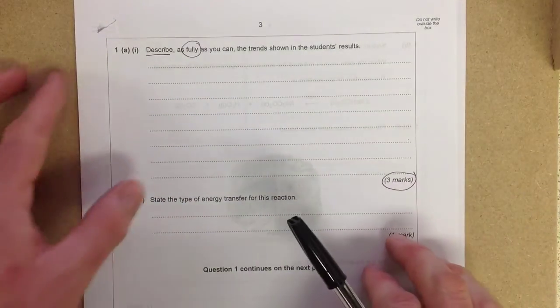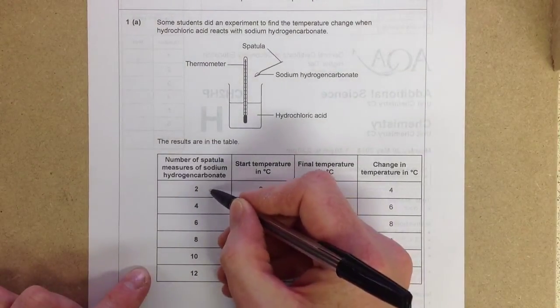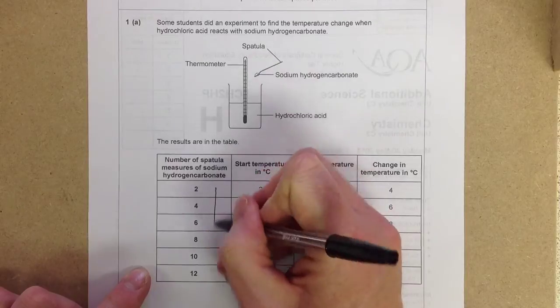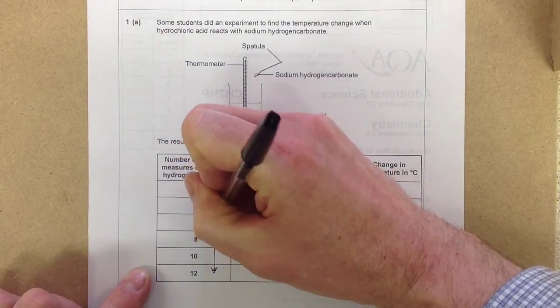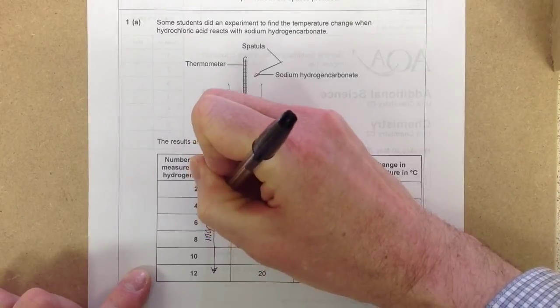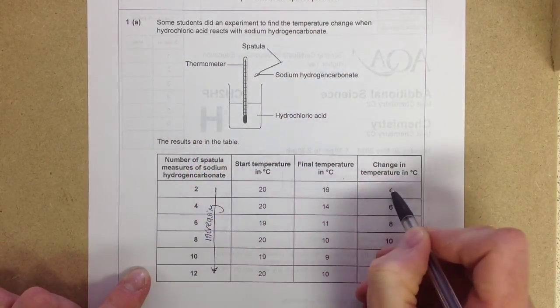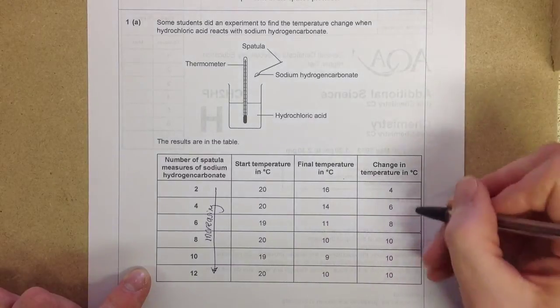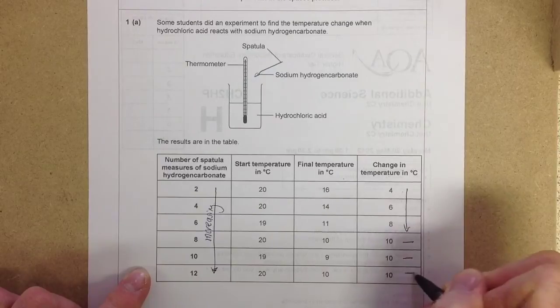So let's have a look at the data. Right, this spatula is increasing. I'll put a little arrow on here to help me out and write the word increasing. There's the starting temperature, the final temperature, the change in temperature. Yet again, we can see that increases until there, and all of a sudden, it stays the same.